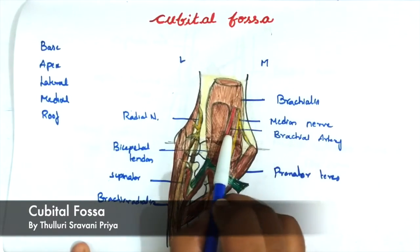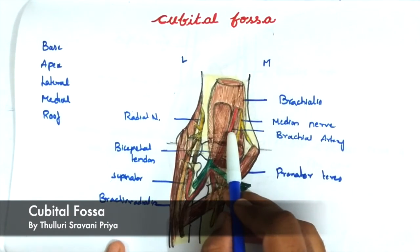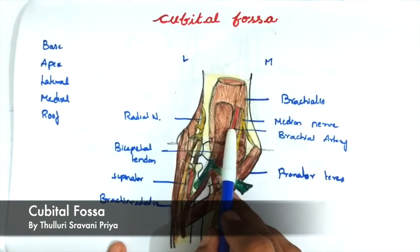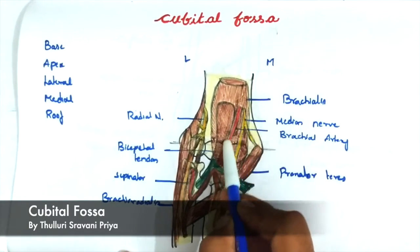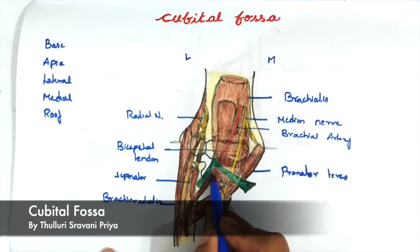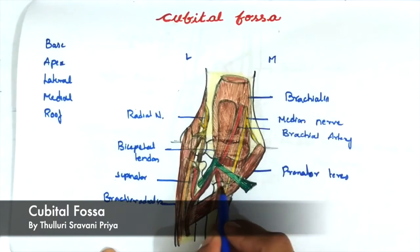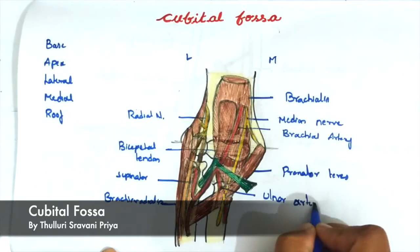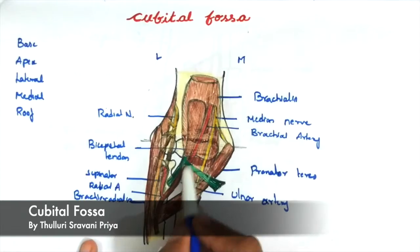Next, the brachial artery lies almost at the center of the cubital fossa, just medial to the biceps brachii muscle. Exactly at the level of the neck of the radius, the brachial artery bifurcates into the radial artery and the ulnar artery.